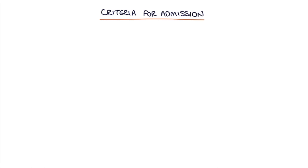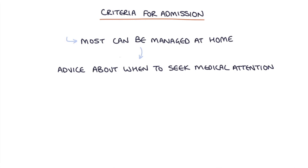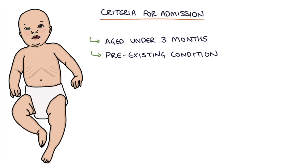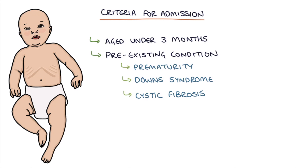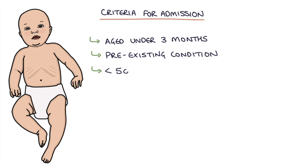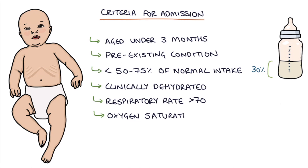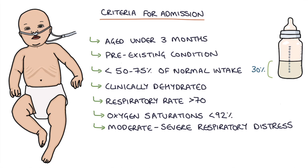The criteria for admission: most infants can be managed at home with advice about when to seek further medical attention. Reasons for admission include children aged under 3 months or with pre-existing health conditions such as prematurity, Down syndrome, or cystic fibrosis. Consider admission if they have 50-75% or less of their normal milk intake, if they're clinically dehydrated, if the respiratory rate is above 70, if blood oxygen saturations are below 92%, if there is moderate to severe respiratory distress such as deep recessions or head bobbing, if there are apneas, or if parents are not confident in their ability to manage at home or access medical help.